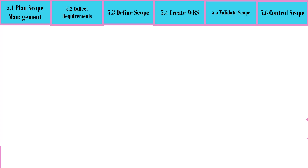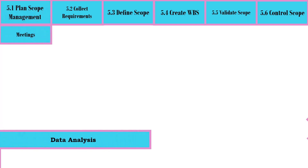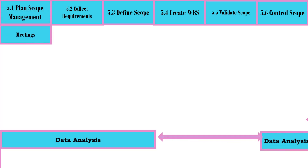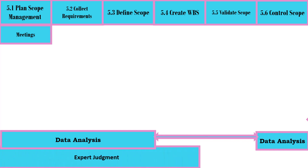Tools and Techniques of Project Scope Management: Plan Scope Management has the following tools and techniques: Meetings; Data Analysis, which is shared with all processes except Create WBS and Validate Scope; and Expert Judgment, which is shared with all processes except Validate Scope and Control Scope. Data Analysis will be discussed in the next slide.